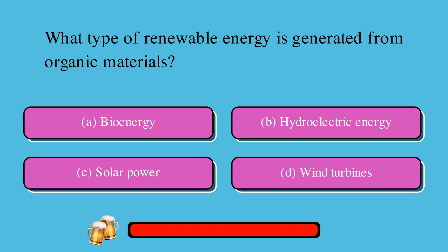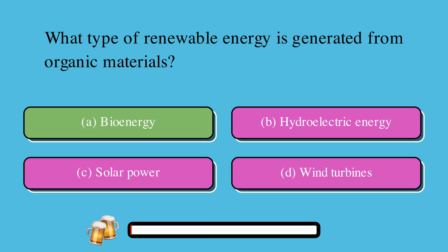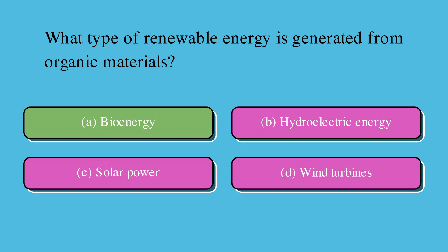What type of renewable energy is generated from organic materials? A. Bioenergy, B. Hydroelectric energy, C. Solar power, or D. Wind turbines? The correct answer is A. Bioenergy.